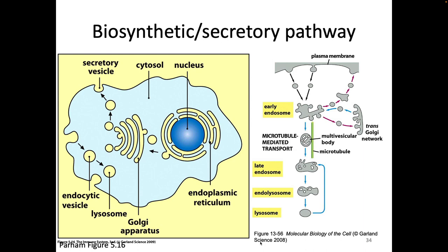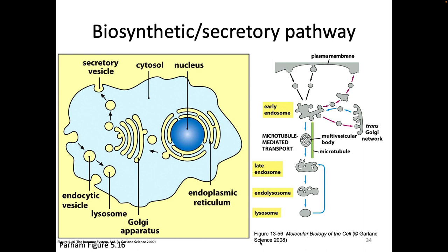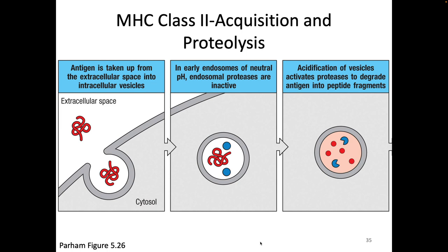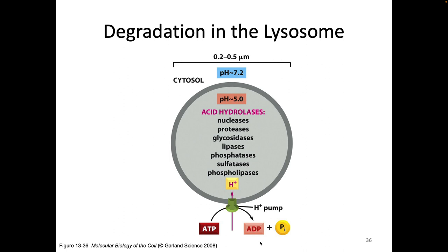As we go through from one compartment to another, those compartments get progressively more acidic. That acidification turns on some proteases that allows us to do some proteolysis. We have acidic compartments full of nucleases, proteases, glycosidases, lipases — all the 'ases' — so that we can degrade things. This is really the definition of the lysosome — I think of it as the trash can for the biosynthetic secretory pathway. So proteolysis just happens because you're in the lysosome.